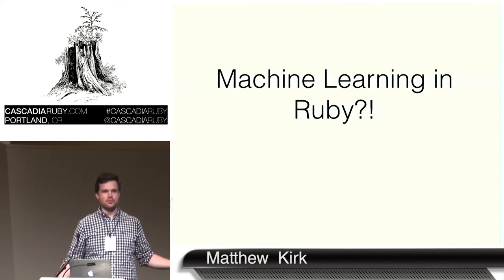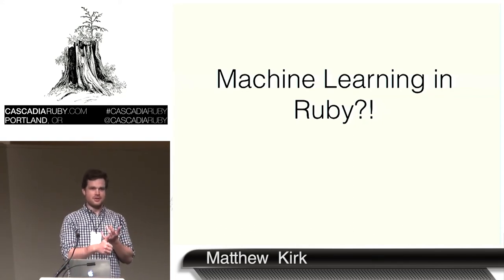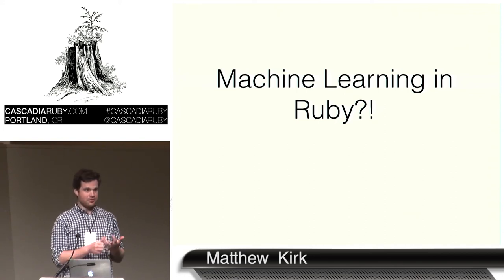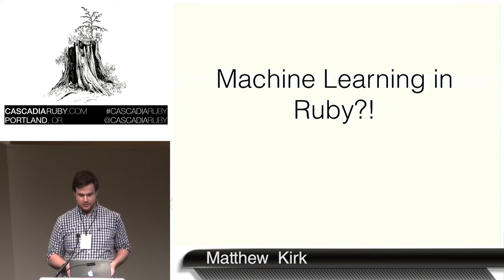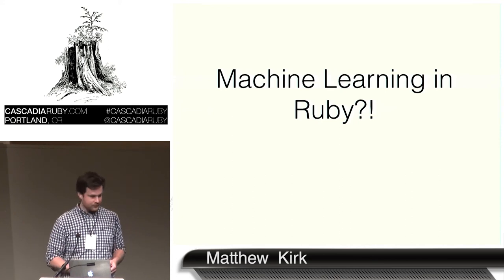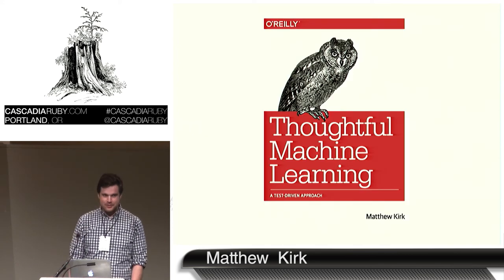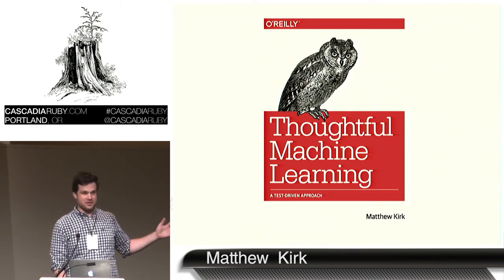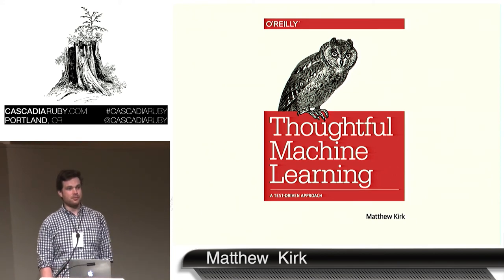Wrong! Ruby has plenty of tools for machine learning like C libraries. You can use JRuby to tie in with Java libraries. There's plain old Ruby like AI for R. There's plenty of Ruby tools to do machine learning. Plus, why not? I feel very passionate about this and I wrote a book on machine learning in Ruby.